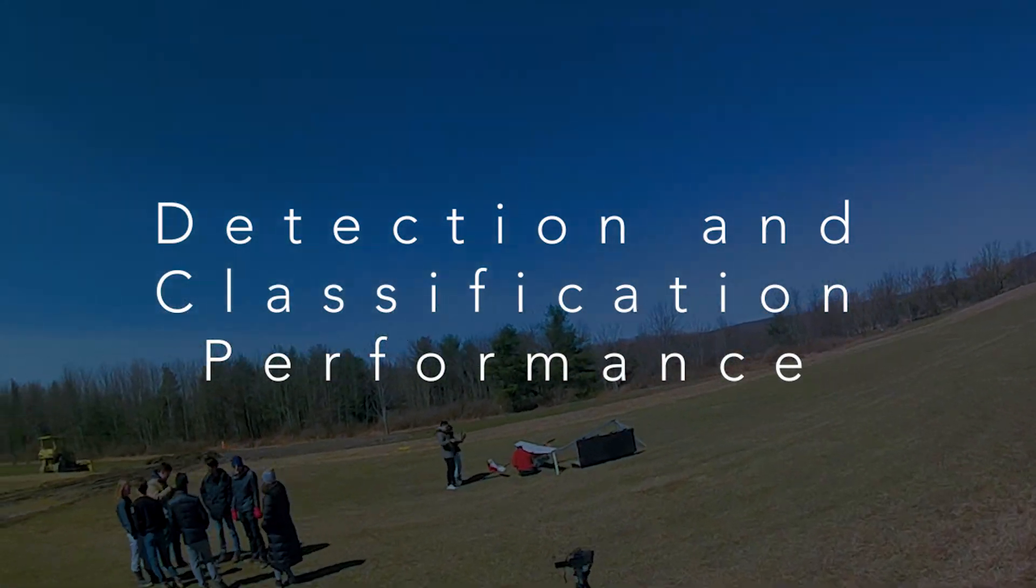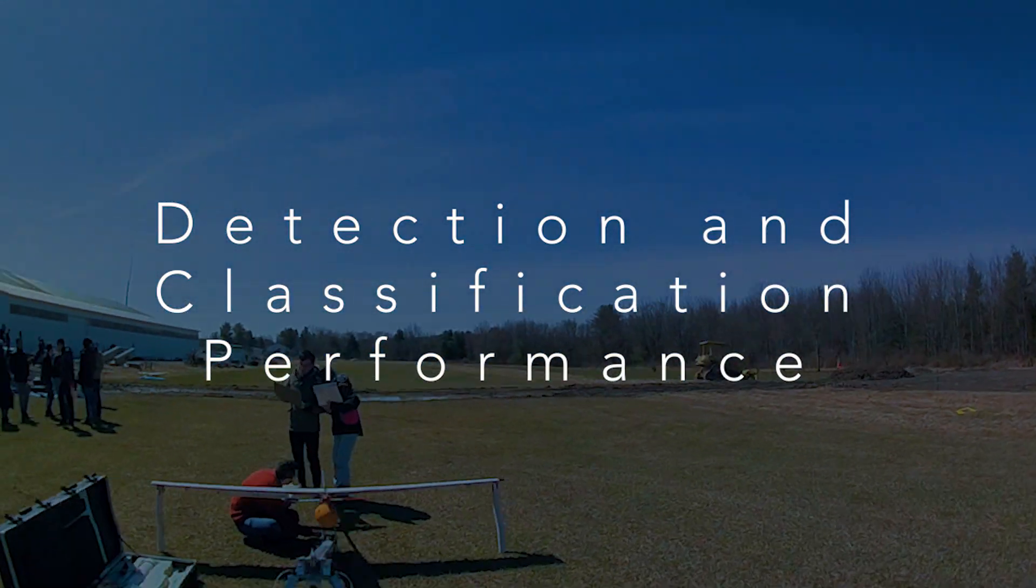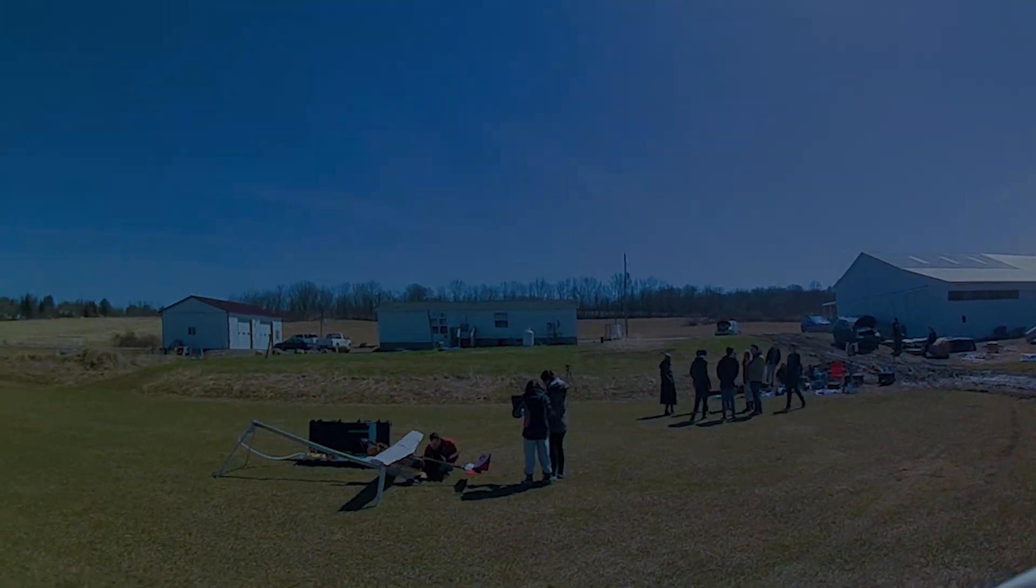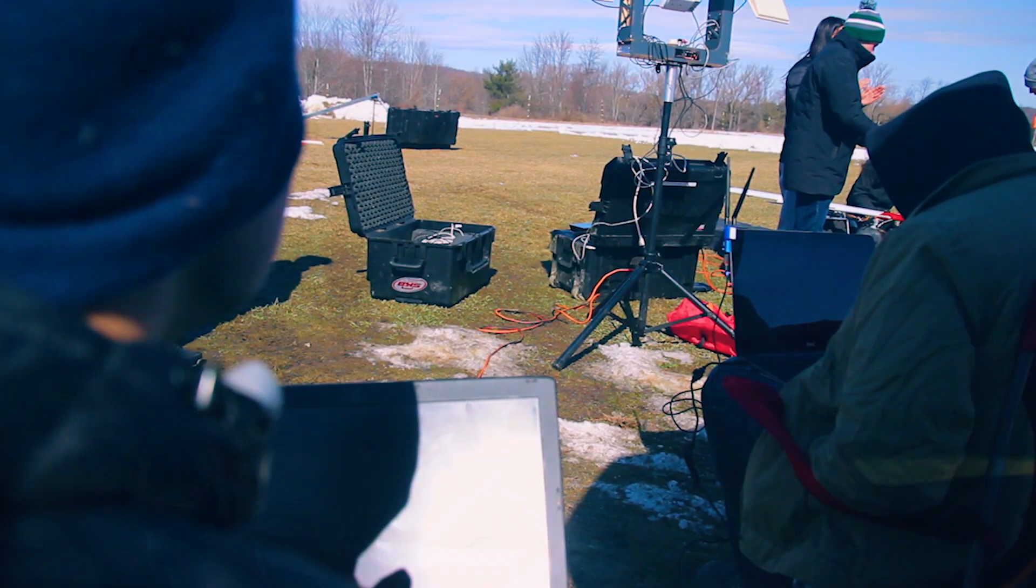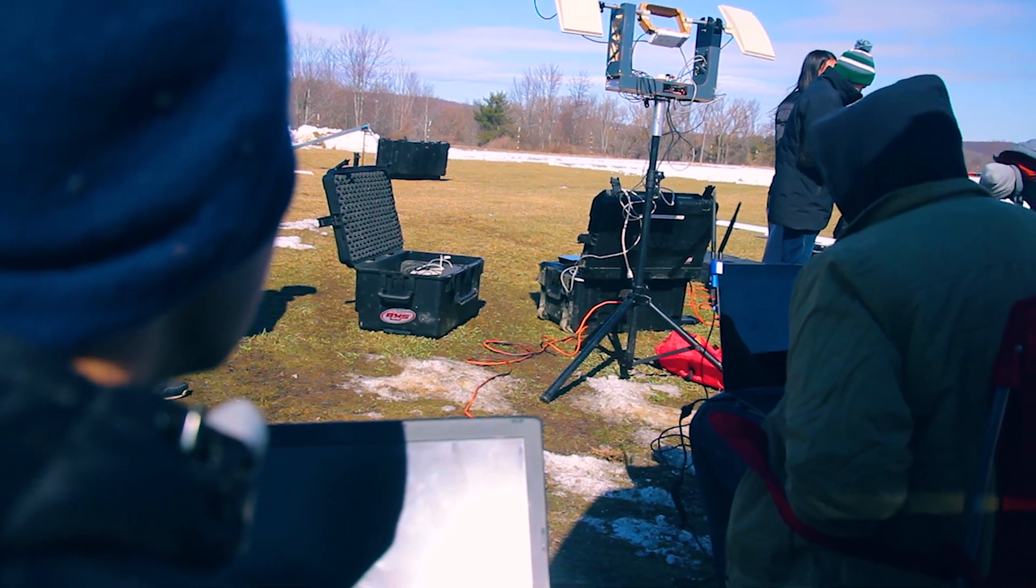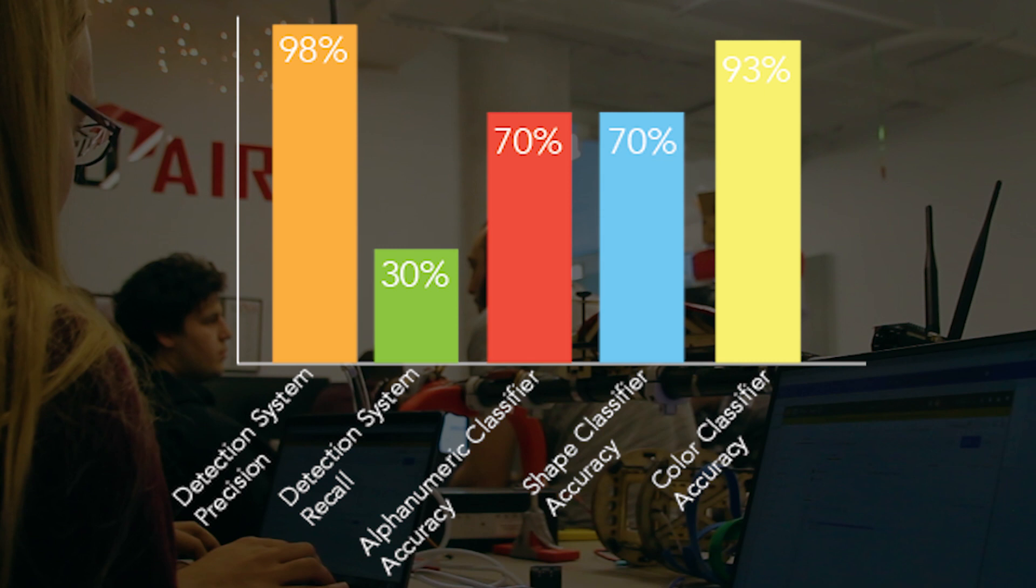Our autonomous detection system has robust performance on high-quality images and often performs as well as human taggers. Testing on data collected from several competitions and test flights on campus, the detection system currently has a precision of 98% and a recall of 30%. The alphanumeric classifier currently runs at 70% accuracy. The shape classifier currently runs at 70% accuracy. The color classifier currently runs at 93% accuracy.